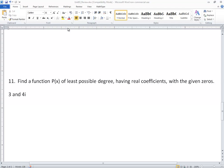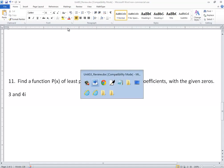In this problem, we want to find a function P of X of the least possible degree, having real coefficients with the given zeros, 3 and 4i.